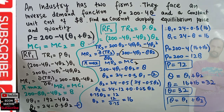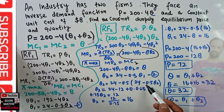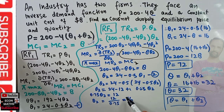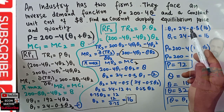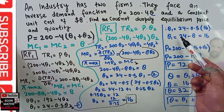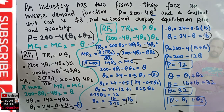Now we have two equations: Q1 = 24 minus 0.5·Q2 (equation 1) and Q2 = 24 minus 0.5·Q1 (equation 2). Substituting equation 1 into equation 2: Q2 = 24 minus 0.5(24 minus 0.5·Q2) = 24 minus 12 plus 0.25·Q2. So 0.75·Q2 = 12, giving Q2 = 16. Plugging Q2 = 16 into equation 1: Q1 = 24 minus 0.5(16) = 24 minus 8 = 16.